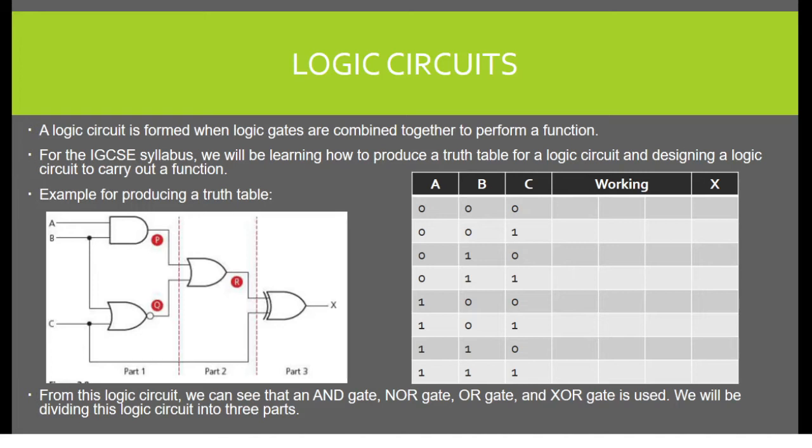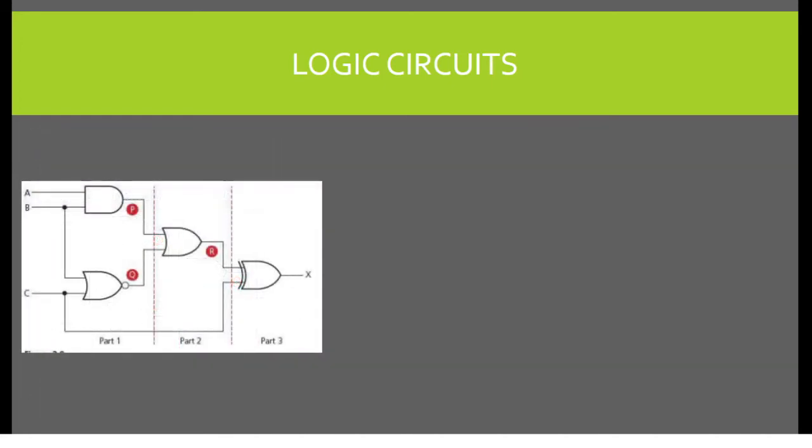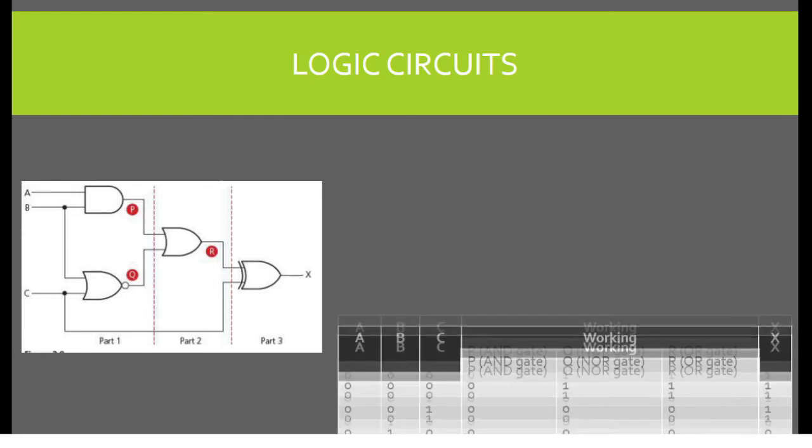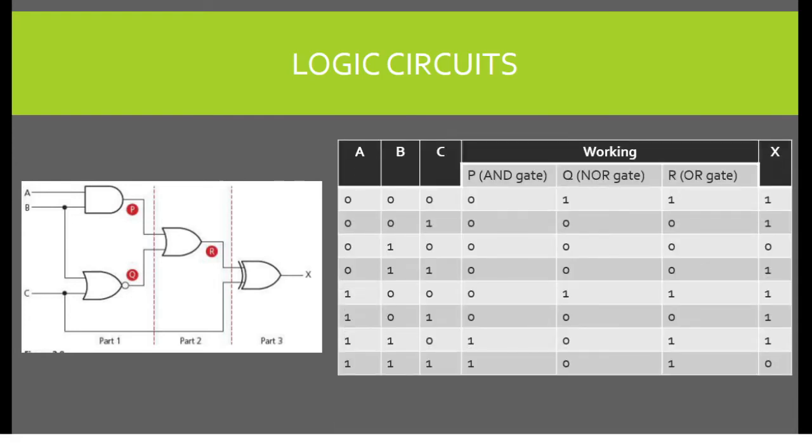Gate P is an AND gate with the inputs A and B. Since it is an AND gate, both inputs have to be 1 in order to get an output of 1. It can be seen that the last two rows give an output of 1.